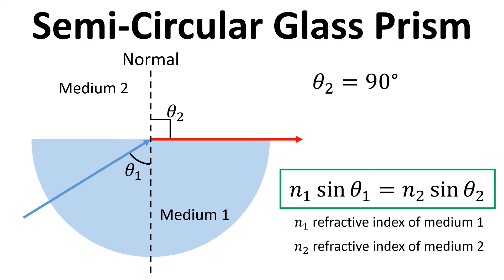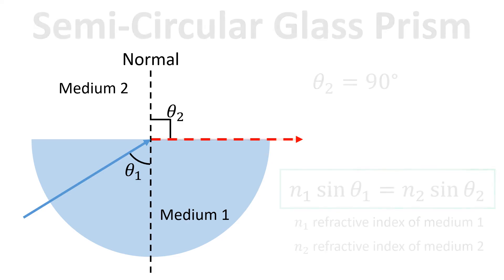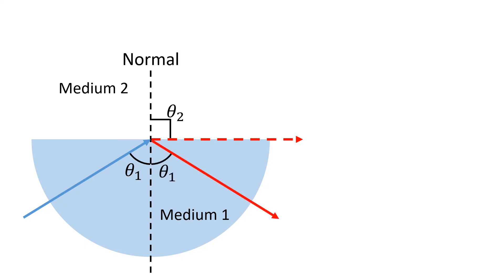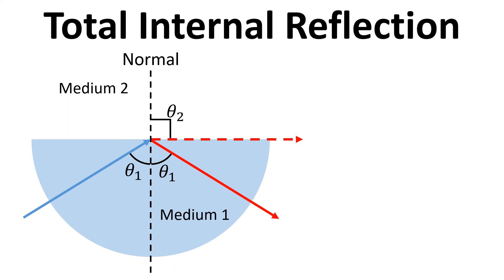Because we're now at 90 degrees, the light ray as it exits is travelling along the surface of the semi-circular glass prism. At this stage, it actually becomes very diffuse and faint. That's because most of the light is now reflected back in the prism. This is referred to as total internal reflection.